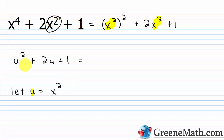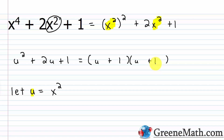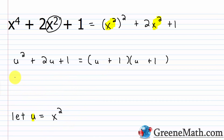It's pretty easy: the first term for each binomial would be u, because u times u gives u squared. I need two integers that sum to 2 and give a product of 1 — that's 1 and 1. So I get u plus 1 times u plus 1, or the quantity u plus 1 squared. Now you're not done, because you want this in terms of x. So go back and resubstitute: replace u with x squared to get x squared plus 1 times x squared plus 1, or the quantity x squared plus 1 squared.